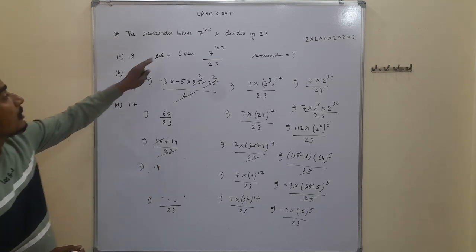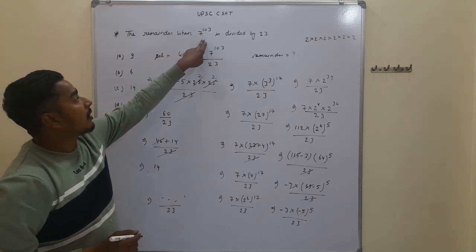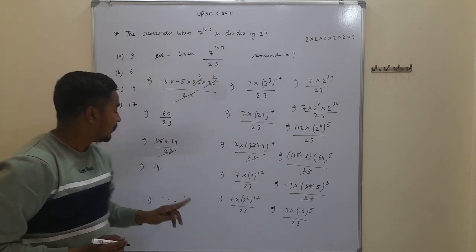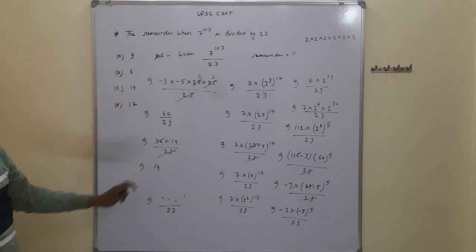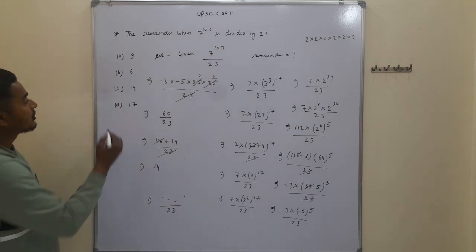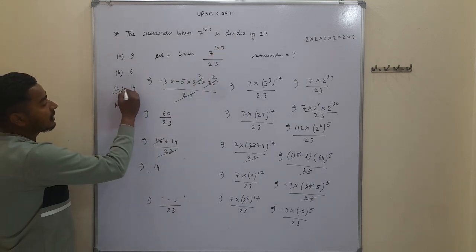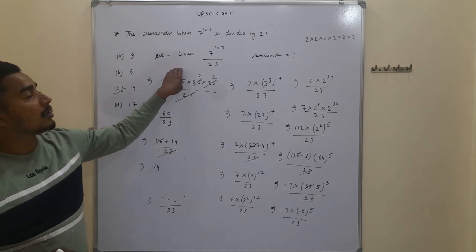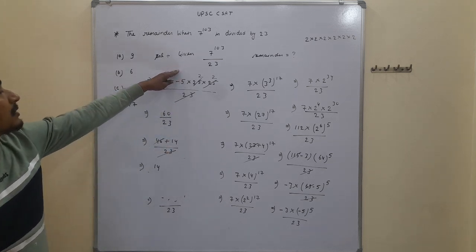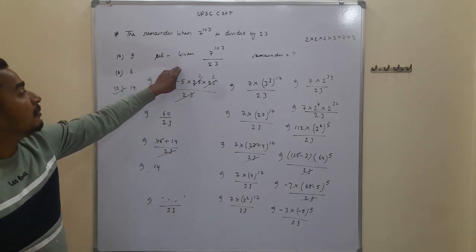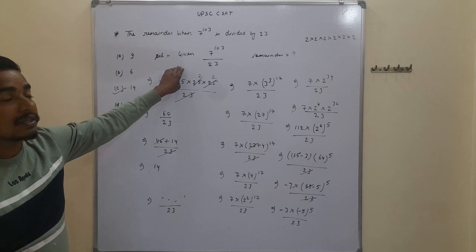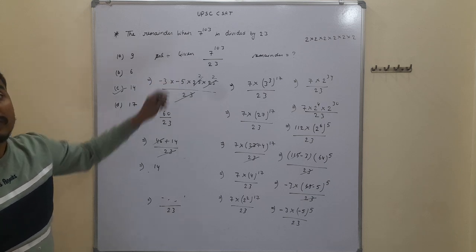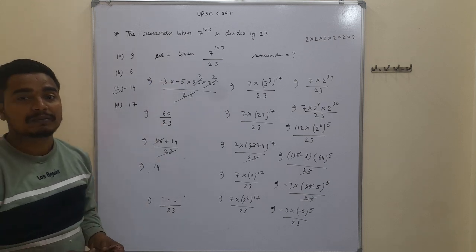When 7 to the power of 103 is divided by 23, we get the remainder 14. Option 3 is the correct answer. This is an important question for UPSC CSAT as well as mains examinations, asked in 2024. Thank you for watching.